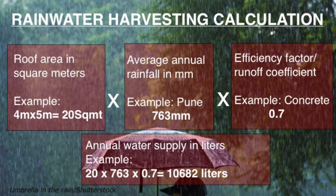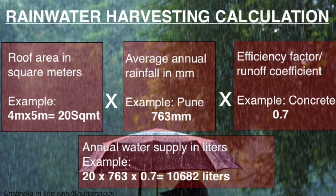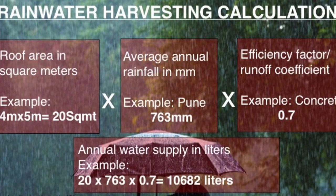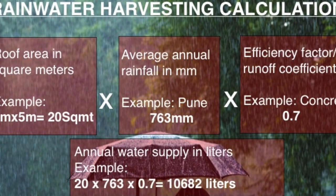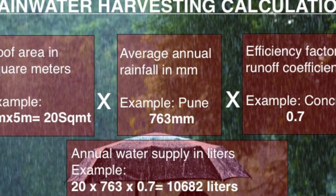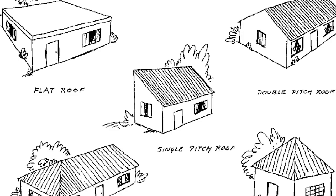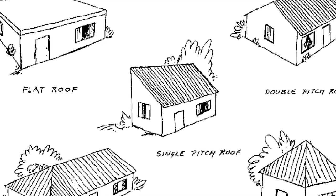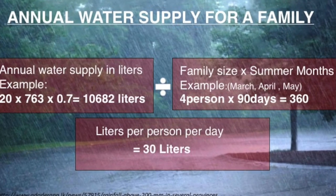To calculate how much rainwater can be harvested, multiply the roof area in square meters by the average annual rainfall in mm by the runoff coefficient factor — whether it is a concrete roof, tile roof, asbestos roof, or iron or metal sheet roof. This gives you the annual water supply.